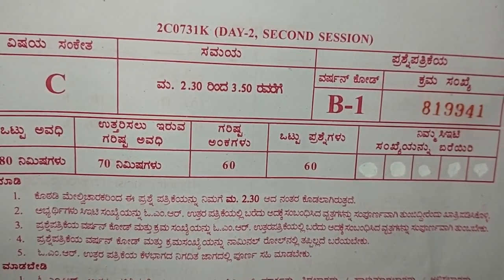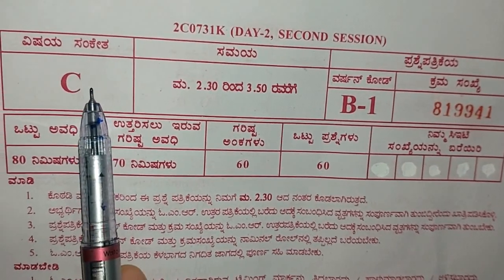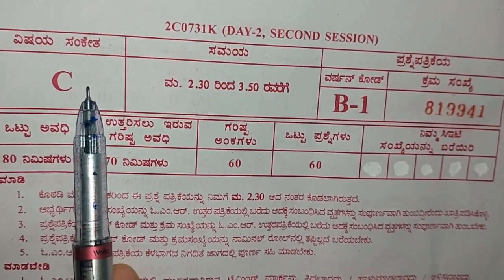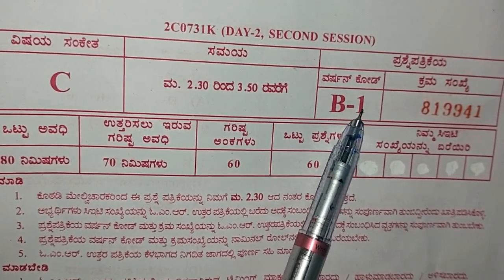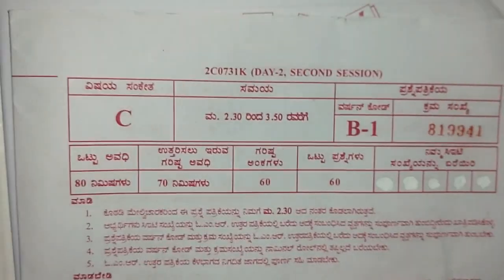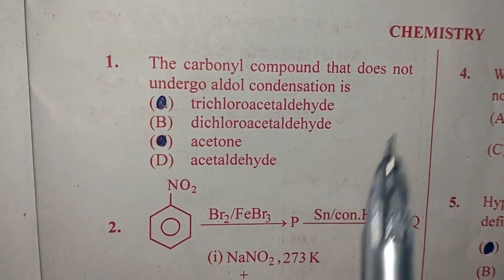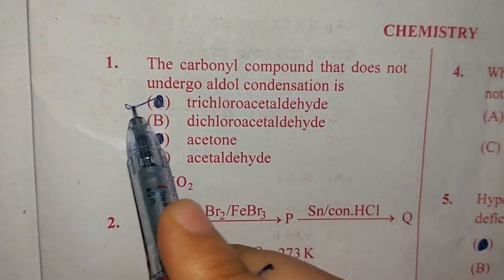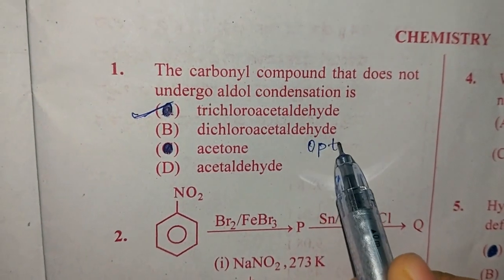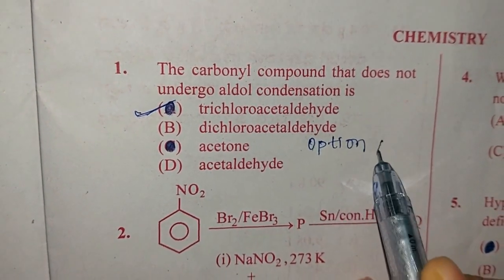Hello students, we will be discussing the CET questions of chemistry of version code B1. Question number 1 asked was, the carbonyl compound that does not undergo aldol condensation is trichloroacetaldehyde. The answer is option A.